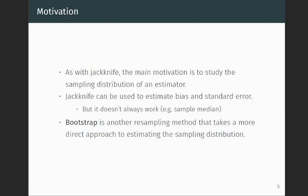Here's the motivation. In the previous lecture we talked about jackknife, which is a resampling method. The main idea was that we want to study the sampling distribution of an estimator without making any assumption about the distribution of the data. We saw that jackknife can be used to estimate both bias and standard error, but it doesn't always work — the sample median is one such example. Bootstrap is a generalization of jackknife; it's another resampling method that takes a more direct approach to estimating the sampling distribution, and it works in more general settings.